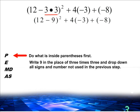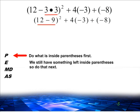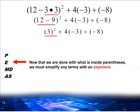We still have something inside the parentheses, so we must get that down to one number before we can do any other part of our math expression. 12 minus 9 is 3, so inside parentheses, we are going to write the number 3, and we are going to have to raise that to the second power.